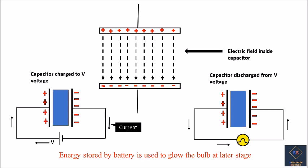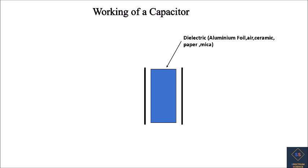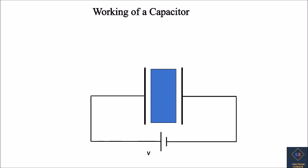Working of a capacitor: a capacitor consists of two conducting metal plates separated by an insulator or dielectric. This dielectric can be aluminum foil, air, ceramic, paper, or mica. On the basis of the dielectric, capacitors are classified as film capacitor, ceramic capacitor, or electrolytic capacitor, all of which have specific ranges of applications. Initially, both plates of the capacitor are neutral.